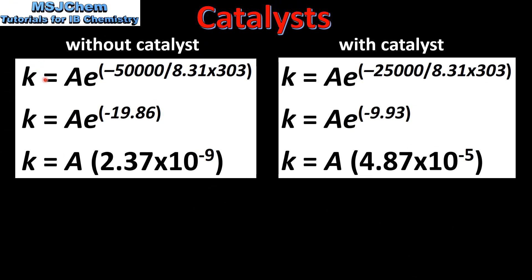Here we have the Arrhenius equation, and we're going to look at the fraction of molecules that have energy equal to or greater than the activation energy without a catalyst and with a catalyst. On the left, without a catalyst, we have an activation energy of 50,000 joules per mole. On the right, with a catalyst, we have an activation energy of 25,000 joules per mole.